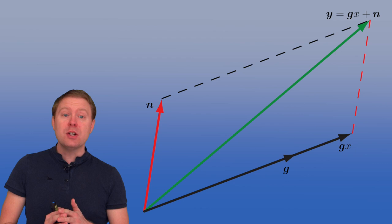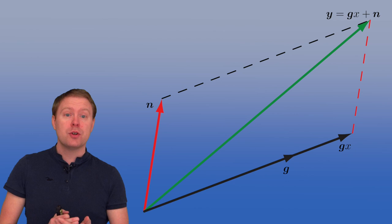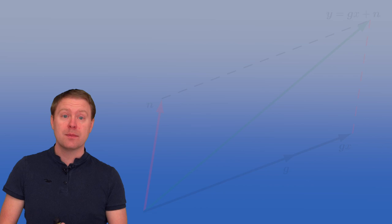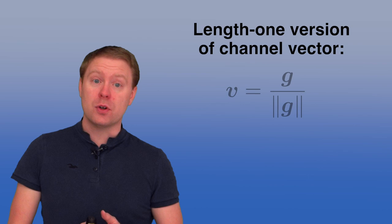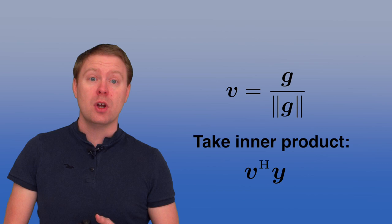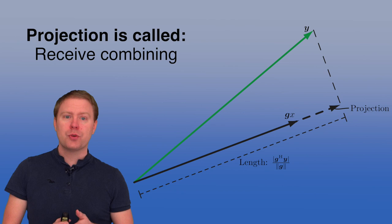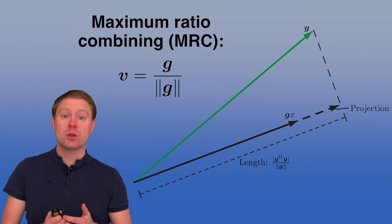Since we know that all the information is in the same direction as G in this vector space, everything pointing in other directions can only be noise. Part of the noise would also point in the same direction as G, but most of it points in other directions. So what we want to do at the receiver is to project Y back onto the direction of the channel G. We create a length-one version of G called V, which is G divided by the norm of G, and take the inner product between Y and V. This is called received combining, and specifically maximum ratio combining, because it maximizes the signal-to-noise ratio.